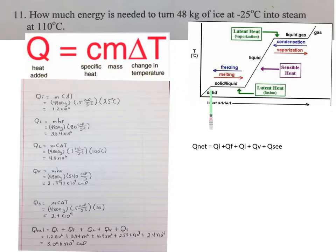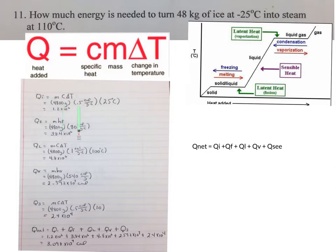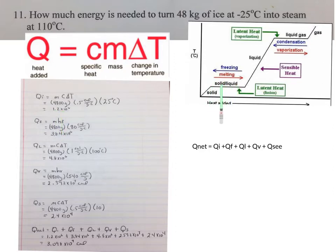Starting with Q sub I: using mass times specific heat times change in temperature. We convert 48 kilograms to 4,800 grams. The specific heat of ice is 0.5 calories per gram degree Celsius. The temperature change is 25 degrees — from negative 25 up to 0 degrees Celsius, when melting begins. That gives us Q sub I. Next, for heat of fusion — Q sub F — the formula is mass times heat of fusion: 4,800 grams times 80 calories per gram, giving us Q sub F.